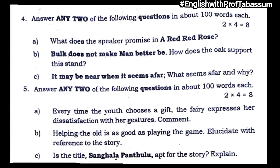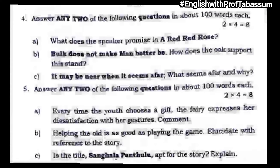Bit number four: answer any two of the following questions in about 100 words each. 'What does the speaker promise in A Red Red Rose?' — this is from the poem 'A Red Red Rose.' 'Bulk does not make man better be — how does the oak support the stand?' — this is from 'The Noble Nature.' 'It may be near when it seems afar — what seems afar and why?' — this is from the poem 'Keep Going.'